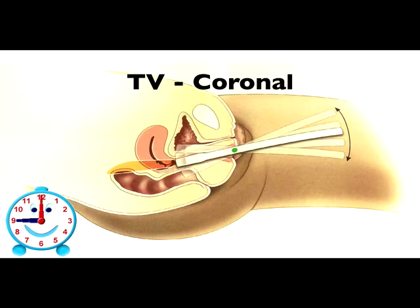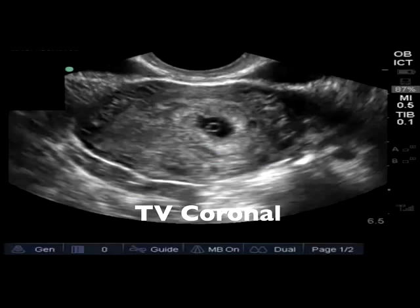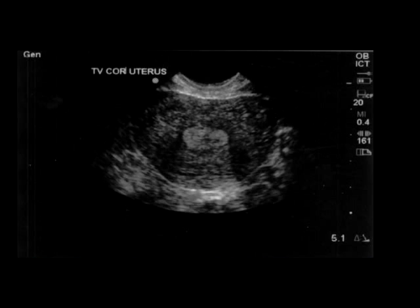We're going to move the ultrasound transducer both anterior and posterior. I usually start by visualizing the bladder — I'll drop my hand to visualize the bladder which is anterior, and then slowly move the ultrasound probe angled posterior in order to visualize the entire endometrium. On the image obtained from the anterior view, at the very top of the screen you can see the bladder on both the right and the left. Just deep to that we can see the uterus and the endometrium. This is a patient who has a visible yolk sac. Another way to identify that this is a coronal image is that the uterus is circular in shape.